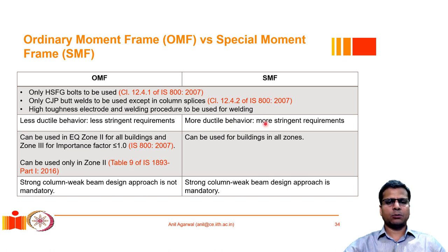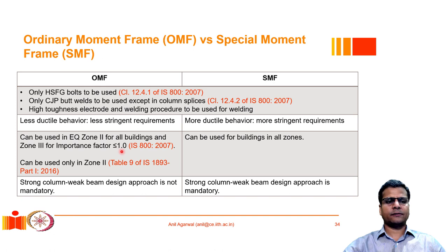Ordinary moment frames offer less ductility than special moment frames, so their application is restricted by seismic zone. OMFs can be used in earthquake zone 2, and IS 800 permits OMFs in zone 3 buildings as long as the importance factor is ≤1 (i.e., not very critical buildings). For all other buildings — zone 3 with importance factor >1, or zones 4 and 5 — only SMFs should be used. IS 1893 Part 1 is stricter and does not allow OMFs even in zone 3.